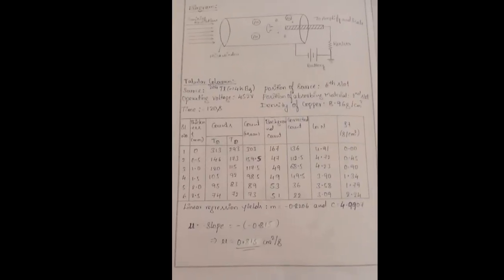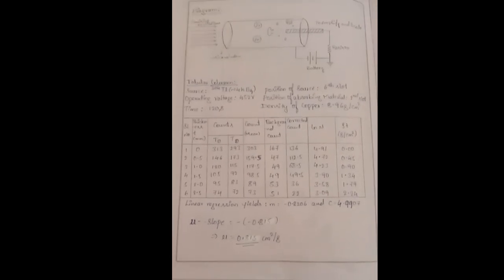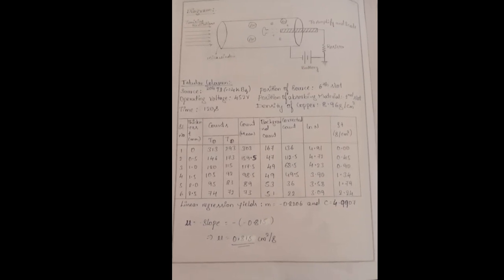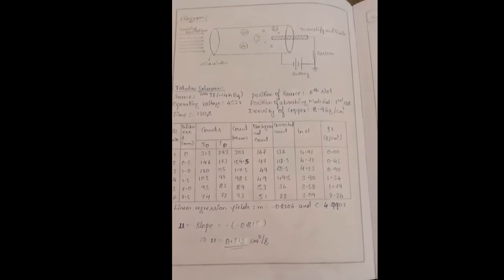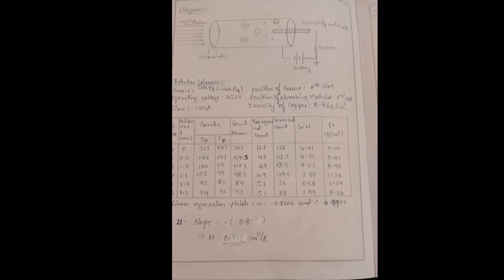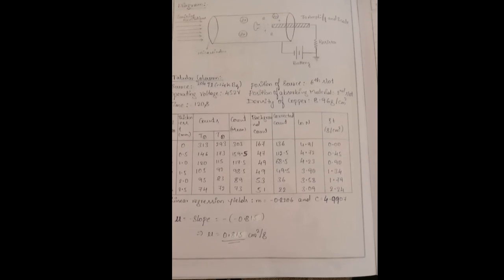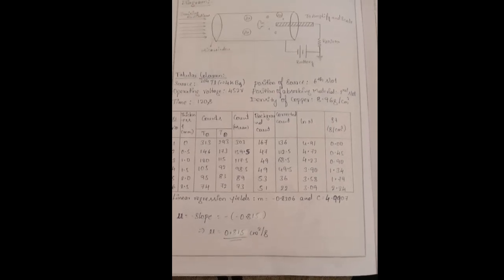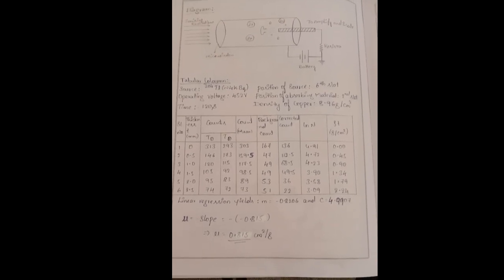Now let's look at the filled observation table. The columns are: serial number, thickness of copper sheet, counts for two trials, mean counts, background counts (taken initially and averaged), corrected counts (mean count minus background count), ln(N) of the corrected count, and ρ × t. The density of copper is 8.96 g/cm², multiplied by the thickness to give ρt.